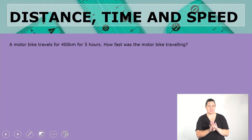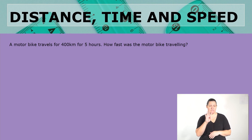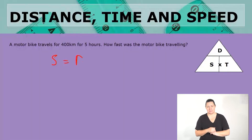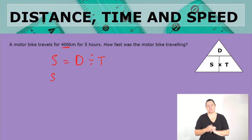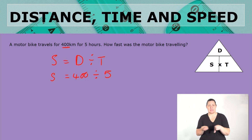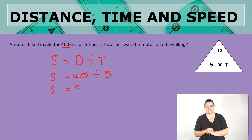Let's look at a second example. Now we have done something to the distance. A motorbike travels for 400 kilometers for five hours. How fast was the motorbike traveling? We are still looking at speed, so do you remember that formula? Distance divided by time. We have now increased the distance, so we now have 400 kilometers divided by the same five hours. 400 divided by five gives us 80 kilometers per hour.